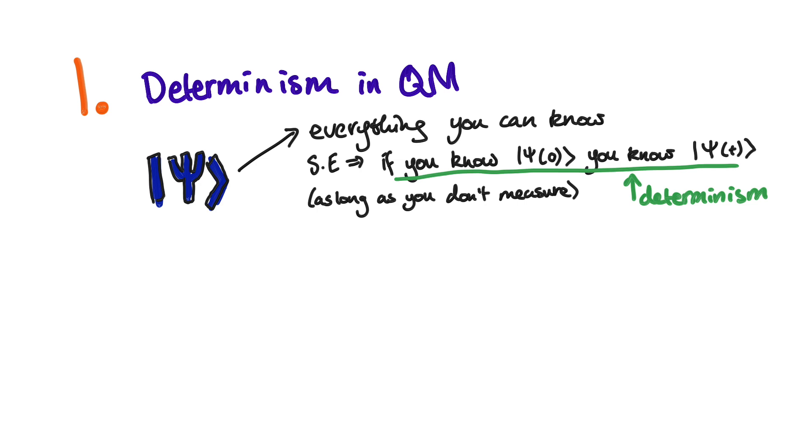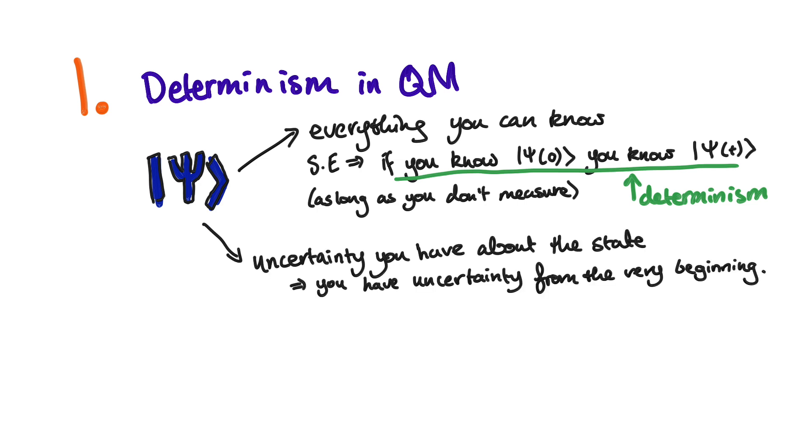However, people pointed out that if you don't think that the wave function is the state, but rather tells you about the uncertainty you have about the state, for example in Bohmian mechanics, then there is uncertainty right from the beginning. But what I wonder is, isn't the opposite of determinism randomness, not uncertainty?